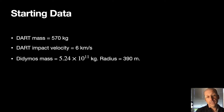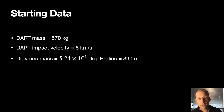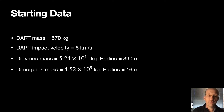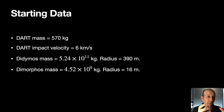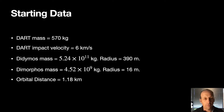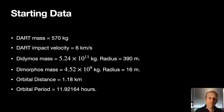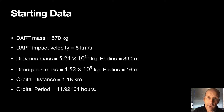The Didymos mass is 5.24 × 10¹¹ kilograms with a radius of 390 meters. Those are not spherical asteroids, but I'm just going to pretend like they are. Dimorphos mass is 4.52 × 10⁹ kilograms with a radius of 160 meters. They know the mass of the whole system and use relative sizes assuming the same density. The orbital distance between the two is 1.18 kilometers, and the orbital period is 11.9 hours — that's the key, because if you know the orbital period before and after the collision, you can see what kind of effect it had.